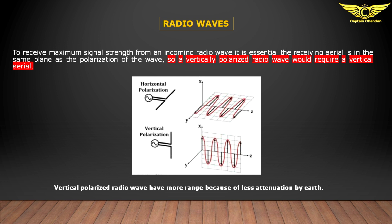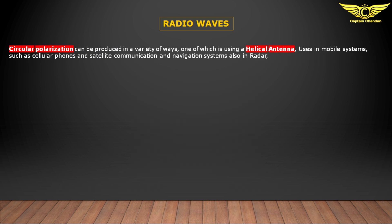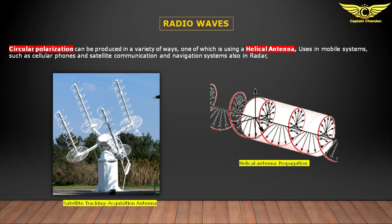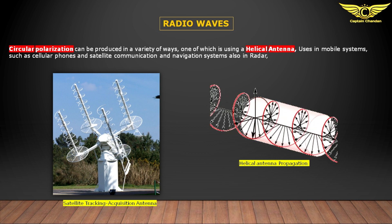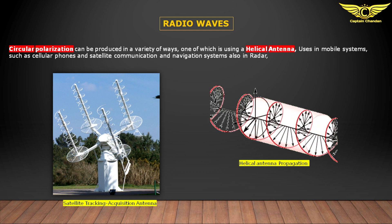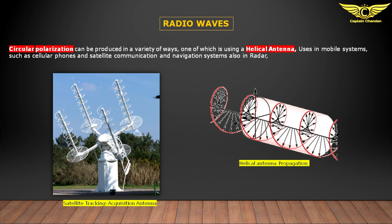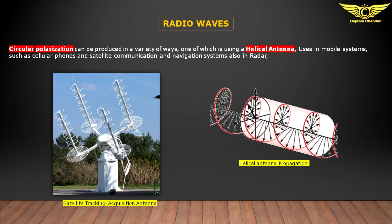Vertically polarized radio waves have a greater range because of less attenuation by the earth. Circular polarization can be produced in a variety of ways, one of which is using a helical antenna — the helical antenna is important for this exam, as they sometimes ask for an example of a circular polarization wave. Circular polarization is used in mobile systems such as cellular phones, satellite communication and navigation systems, and radar.